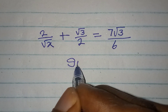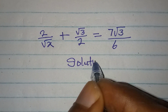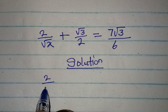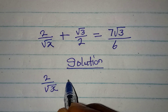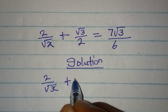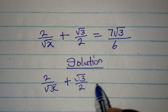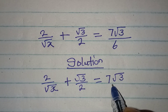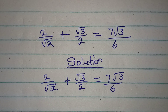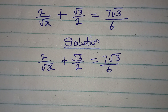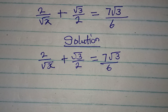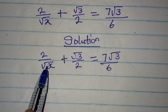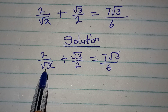Hello everyone, let's provide a solution to this problem. We have 2 over root x plus square root of 3 over 2 equal to 7 root 3 over 6, and we are looking for the value of x. Now before I proceed, if you have a denominator like this with a non-rational, you will rationalize it.